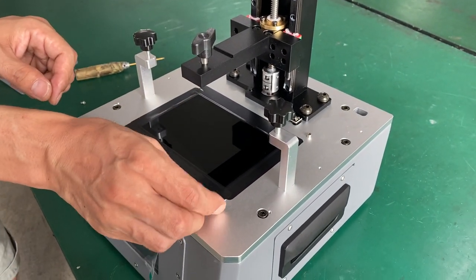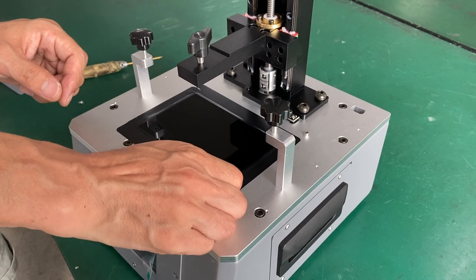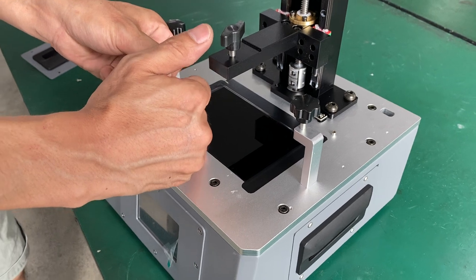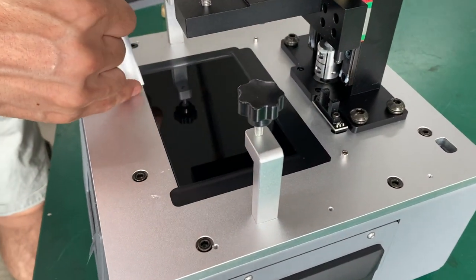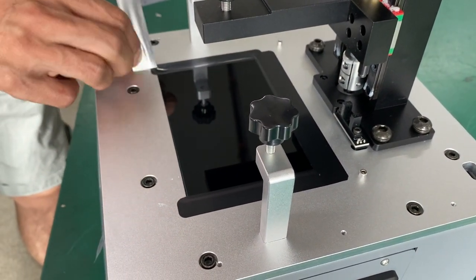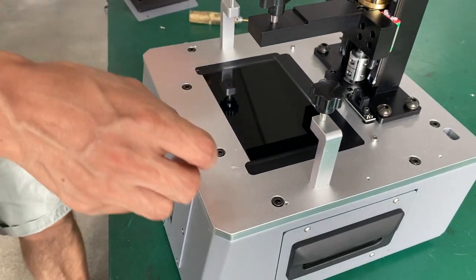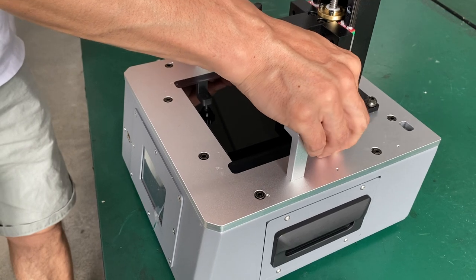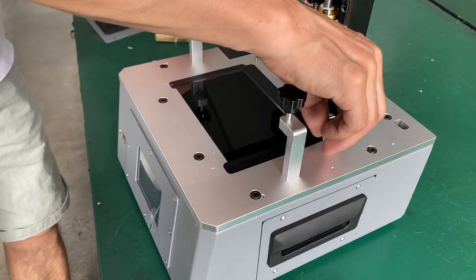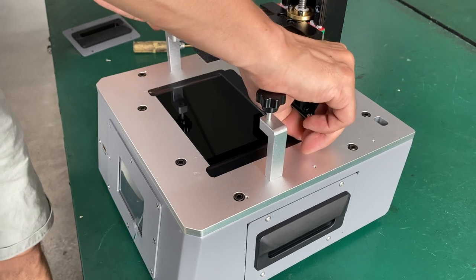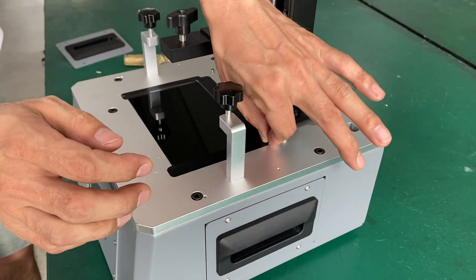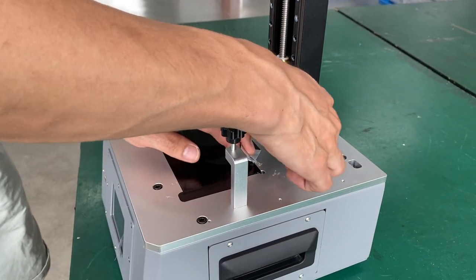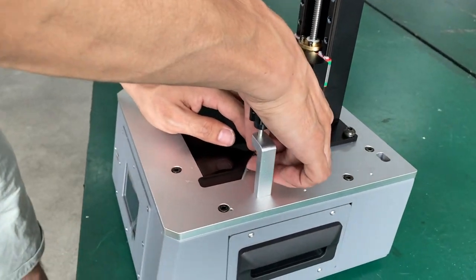Now you can peel off the tape on the screen. Just use your nail to peel up the tape. It's just like student tape, so it's easy to peel off.